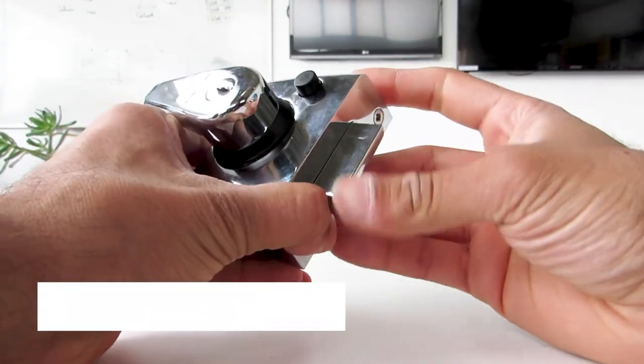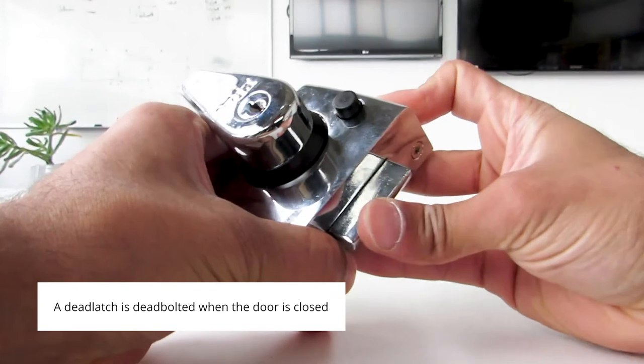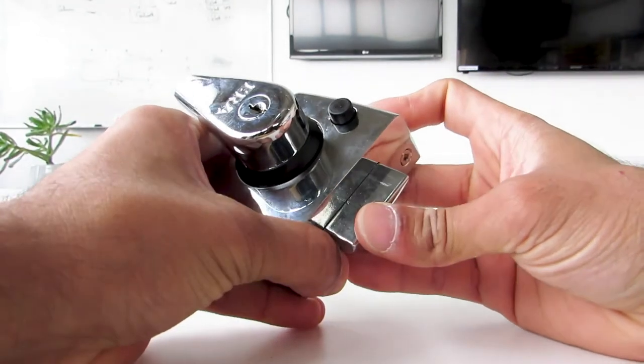However, when the snib is depressed as it would be when the door is shut, this latch becomes dead bolted and therefore the lock can't be forced open in this same way.